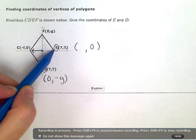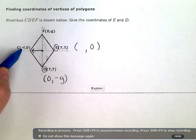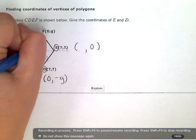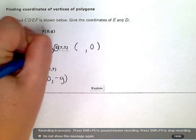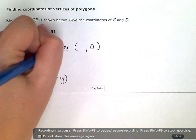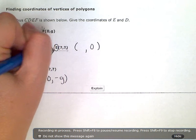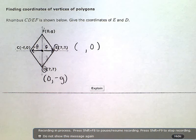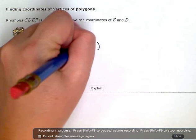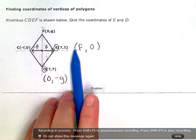But if this is negative F over to the left, then this is going to be the opposite or positive F. So the coordinates of this point would be positive F, 0.